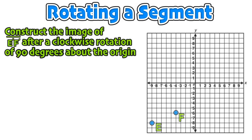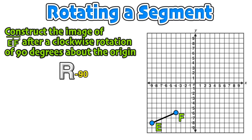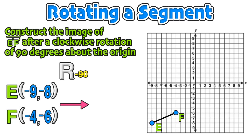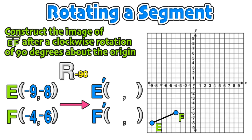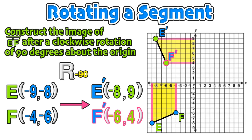Now we're going to step it up and rotate a line segment. We want to construct E′F′ after a clockwise rotation of 90 degrees — that's a negative 90-degree rotation. We start by writing down the coordinates of endpoints E and F to find the coordinates of E′ and F′. We take the entire quadrant that EF is in and rotate it one quarter turn clockwise. This gives us E′ at (−8, 9) and F′ at (−6, 4), constructing the new segment E′F′.